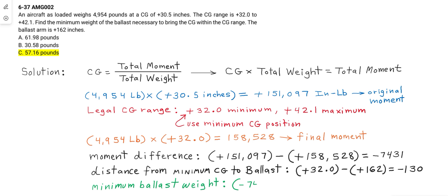This allows us to compute the minimum ballast weight, which is equal to negative 7,431 inch-pounds divided by negative 130 inches, which yields 57.16 pounds as the minimum ballast weight required.